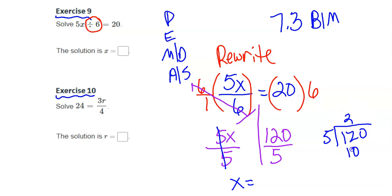Now I need to figure out how many times 5 goes into 120. It goes in 2 times... it looks like my answer is 24. That's the solution to the equation.